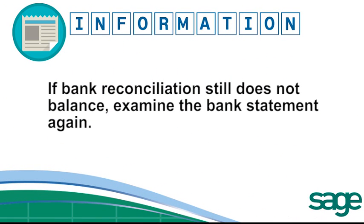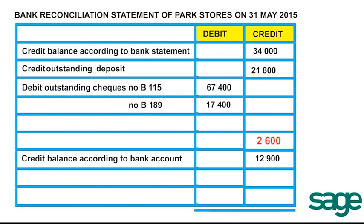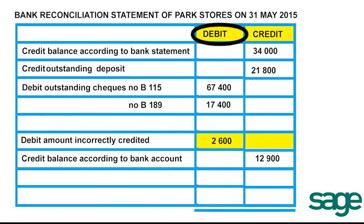As the bank reconciliation statement still does not balance, the bank statement is again examined. A careful analysis reveals two mistakes. A deposit made by Park Traders into their own account was incorrectly added to our account by the bank — the amount is R2,600. Since we are Park Stores, not Park Traders, the R2,600 was originally added as a credit. To remove it, we place it on the opposite side, which is debit.